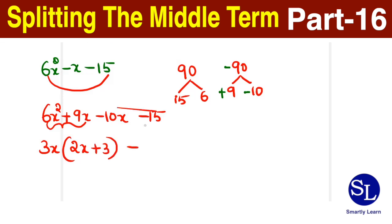And between the last two terms, I'm taking minus 5 outside, getting a 2x plus 3 inside. Now that the 2x plus 3 is common, let's take that out. So that gives us 3x minus 5.